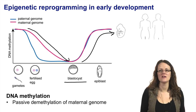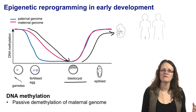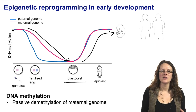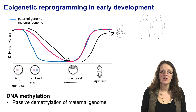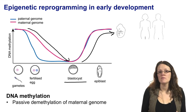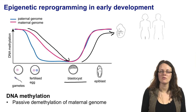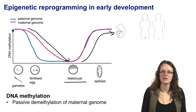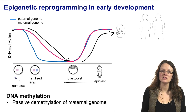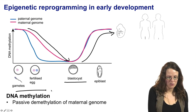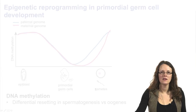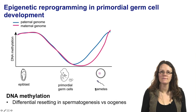This, of course, is a large generalisation. There are periods of development of particular organs where you will see some demethylation and re-methylation and additional epigenetic reprogramming. However, the largest periods of epigenetic reprogramming, when you consider the genome in general, are during early development and then again during primordial germ cell development.